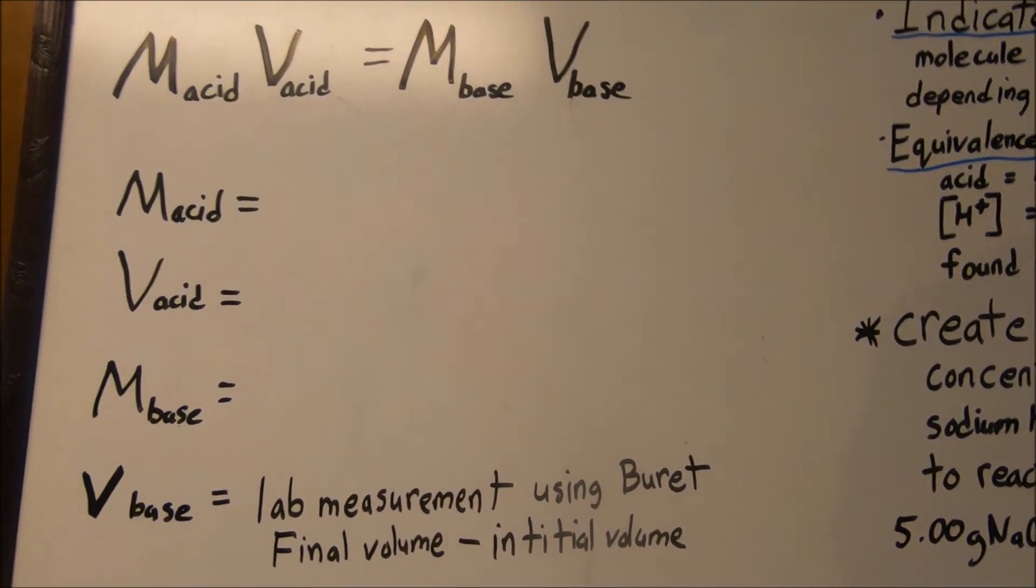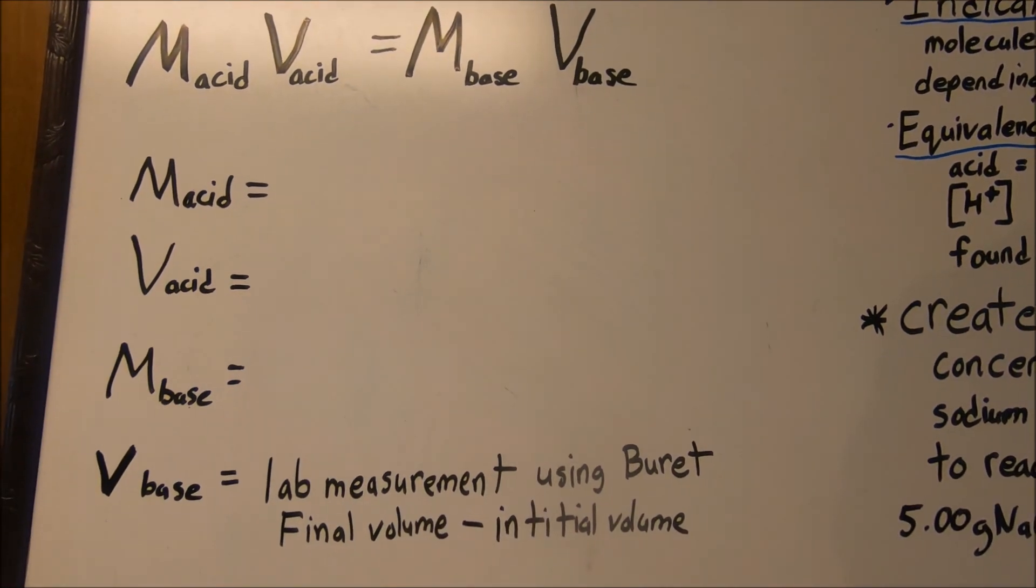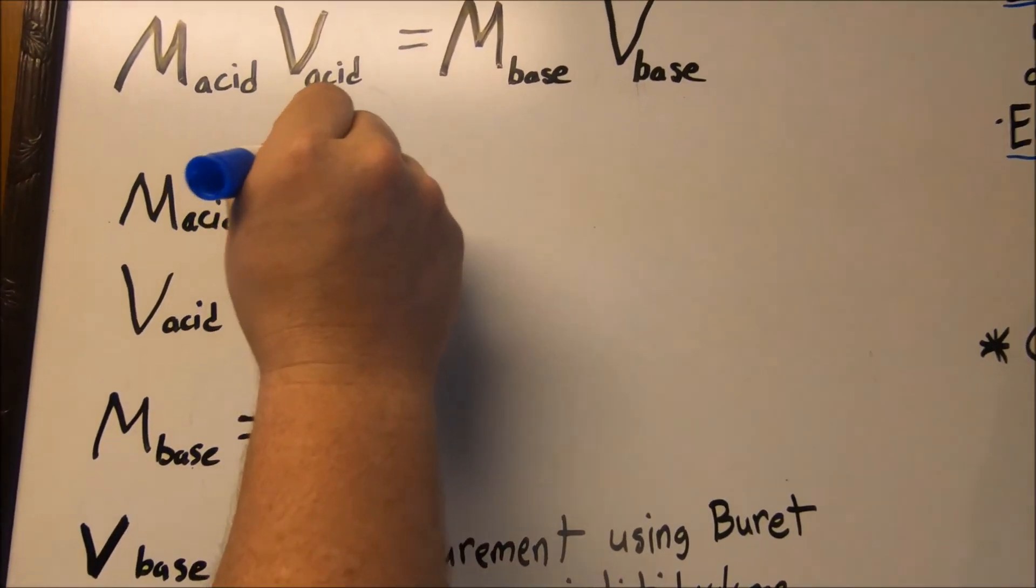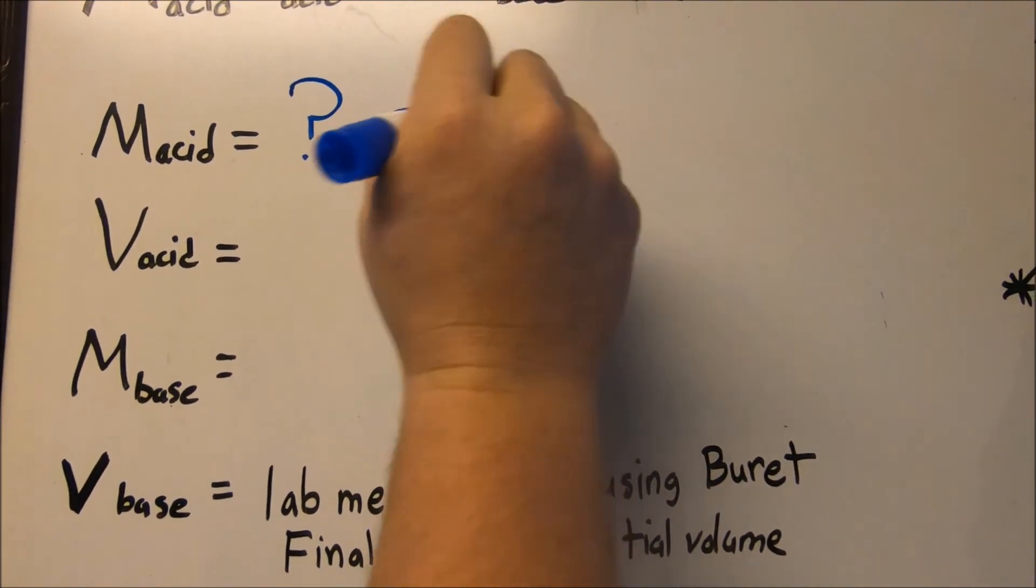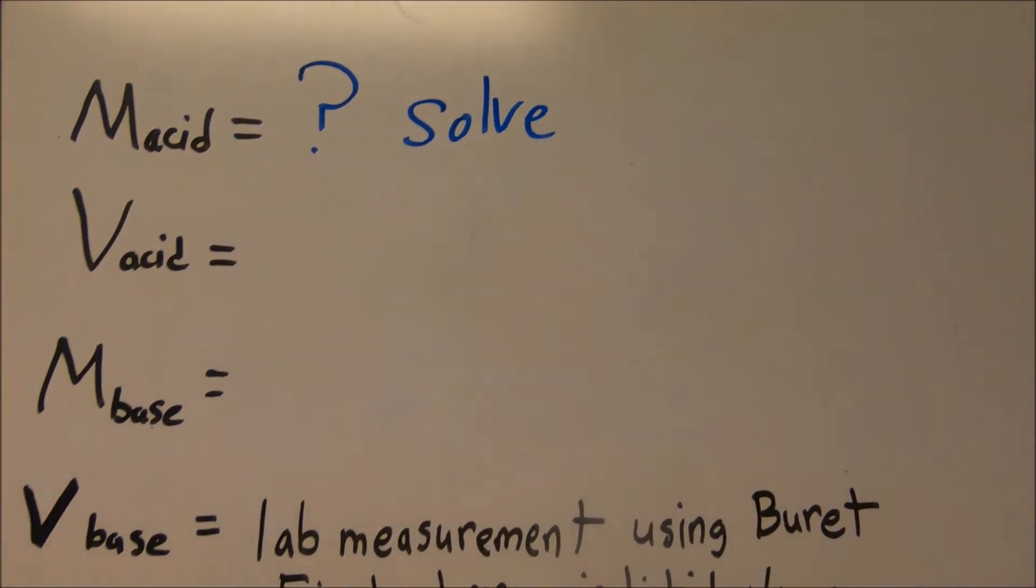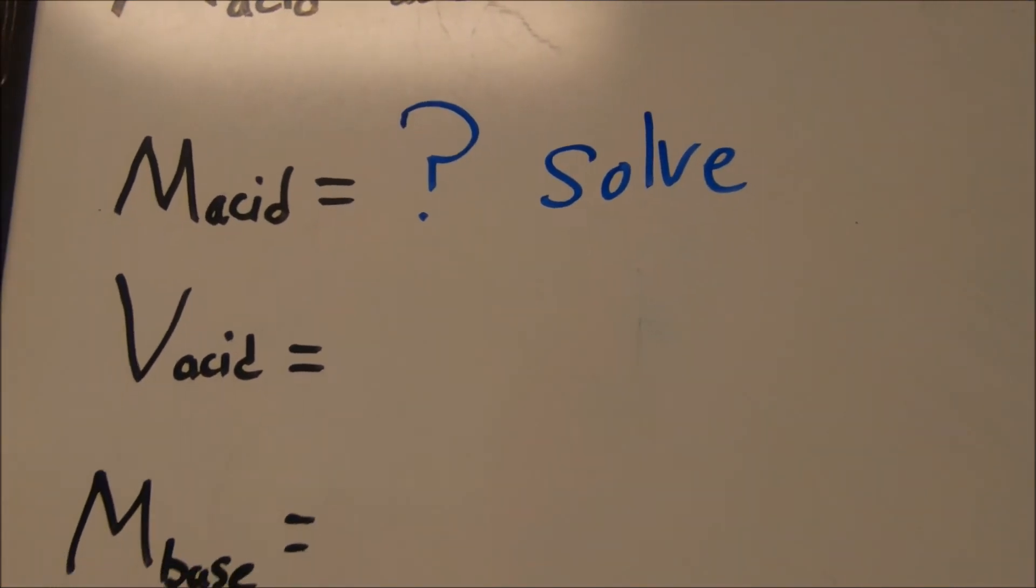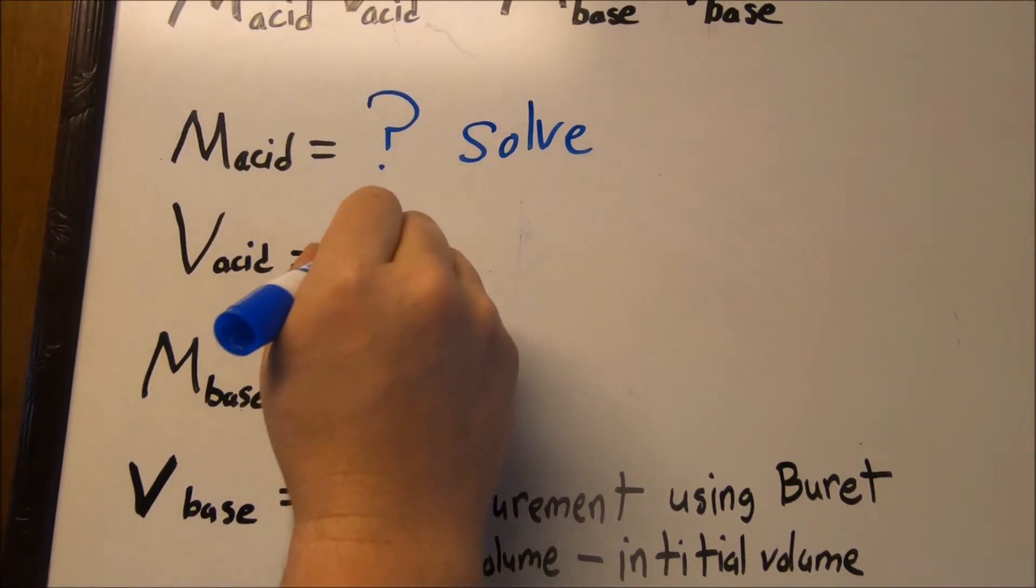The data we're going to collect: the first one is going to be molarity of the acid, this is what we're going to solve for today, how concentrated, how much acid is actually in our soda. From there, volume of acid we're going to be measuring today.